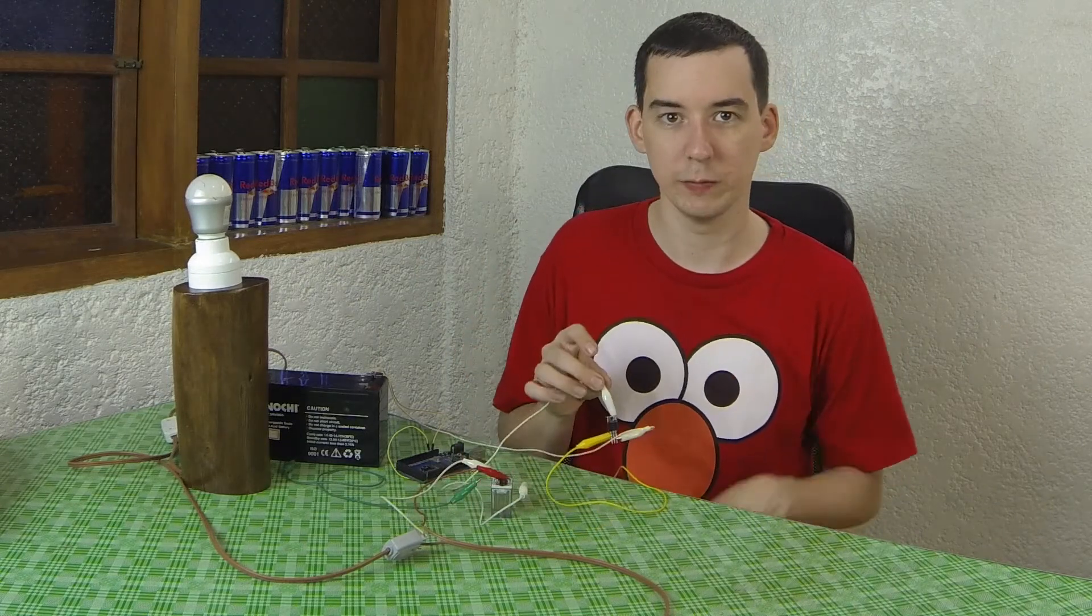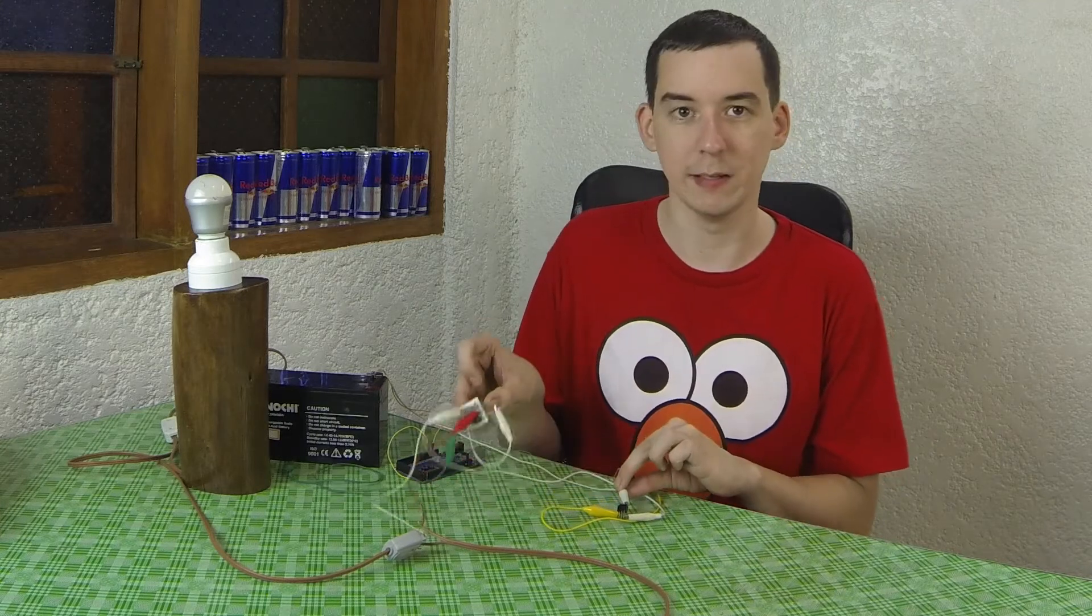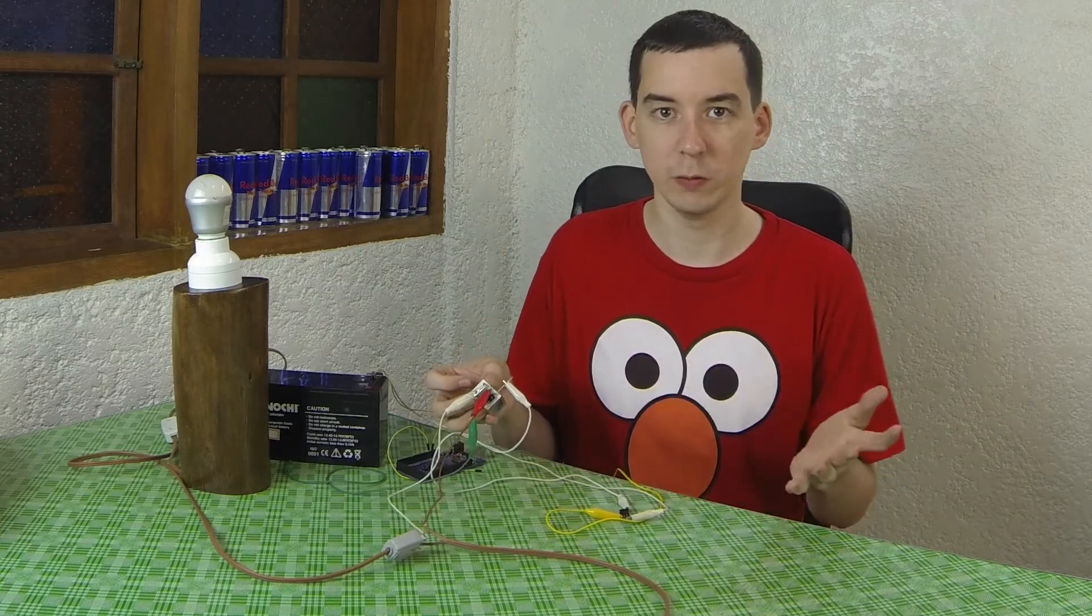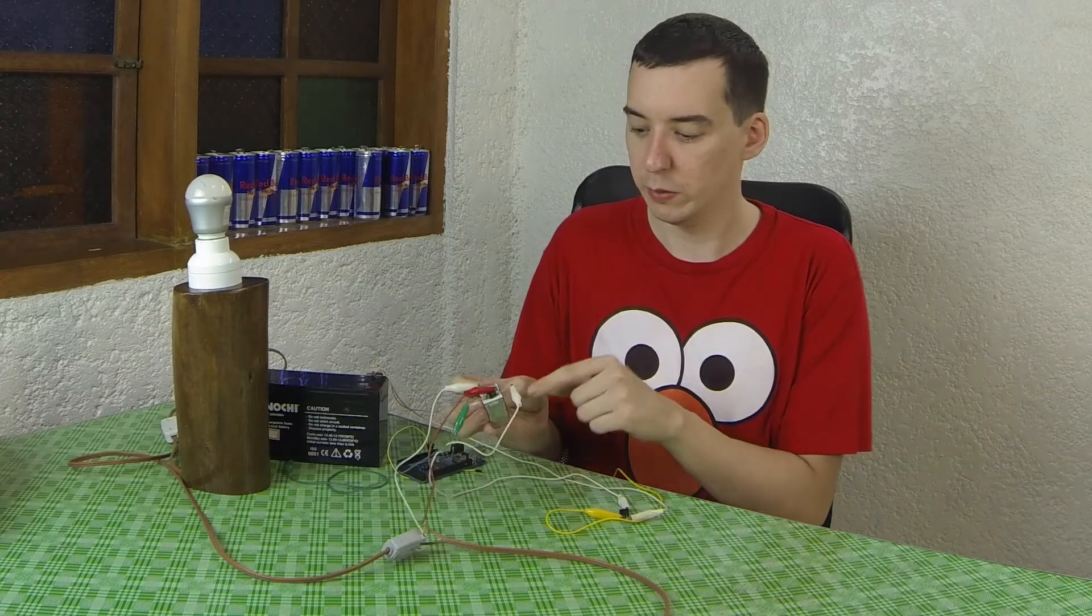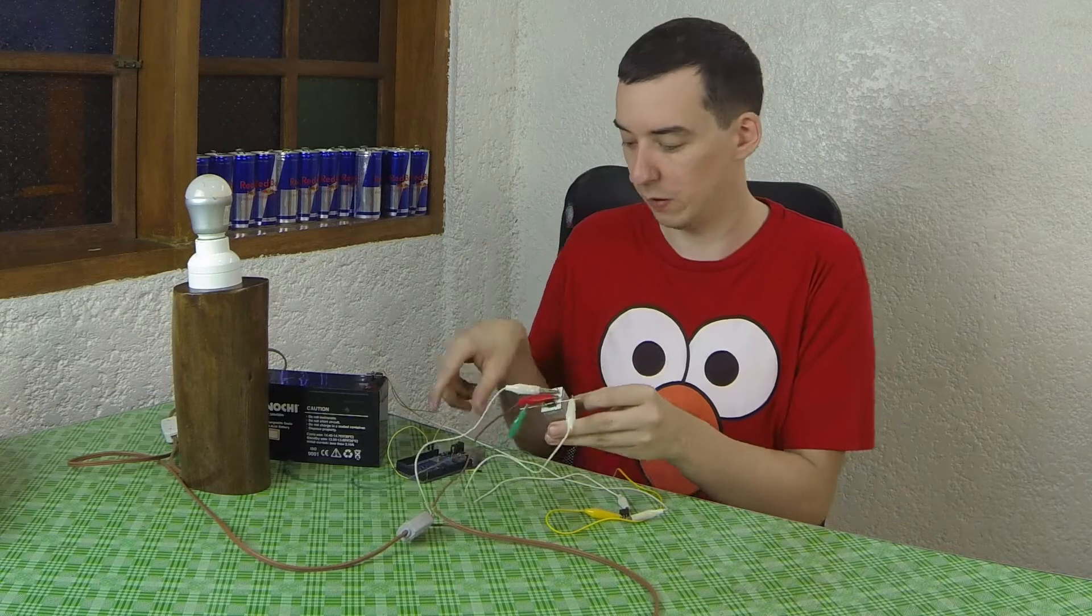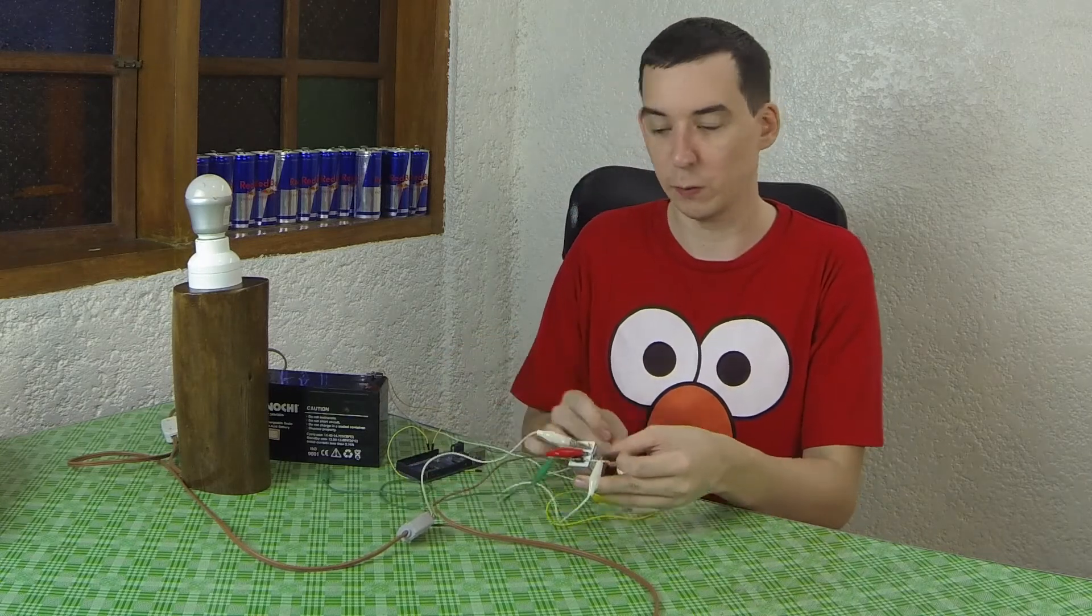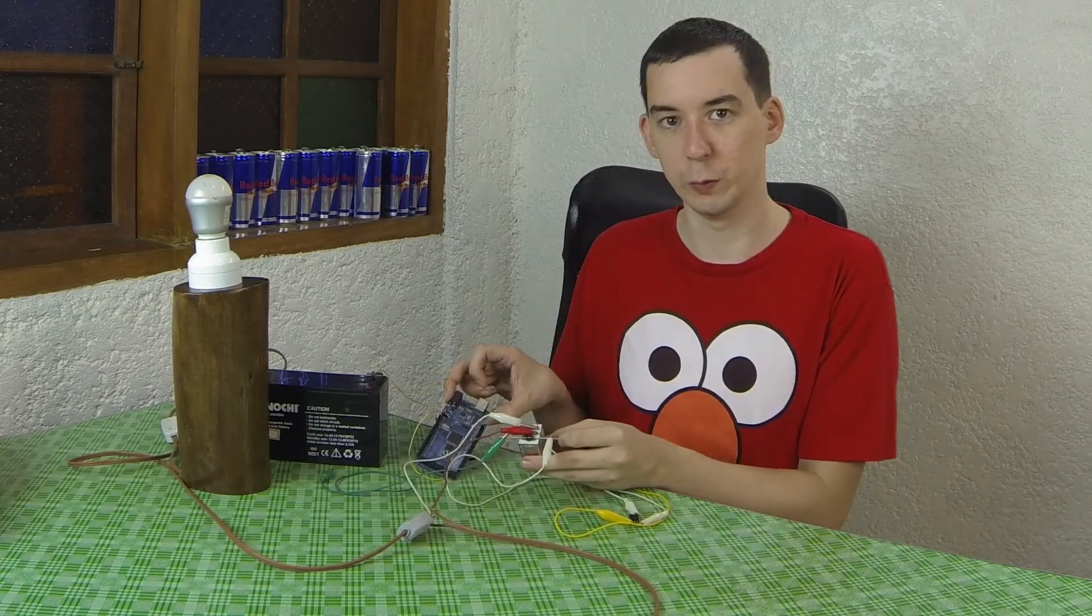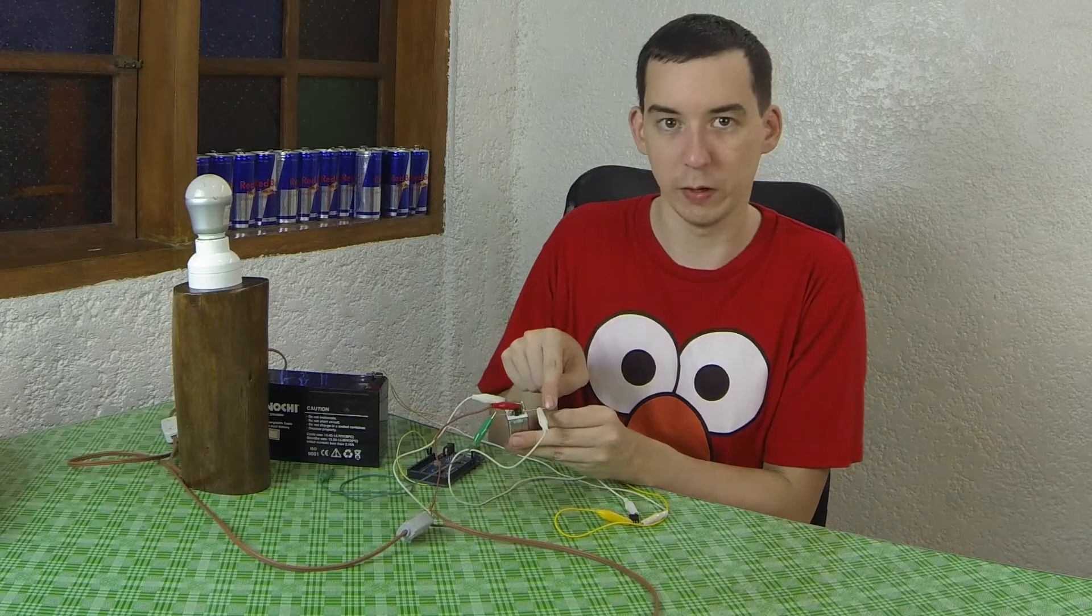Now one thing to remember when you're using N-channel MOSFETs is that if you're using an inductive load, for instance a motor or a relay which has a coil inside, you need to add a diode. If you don't add a diode the back voltage could actually damage the MOSFET or worse it could damage your Arduino. So you must remember to put the diode here.